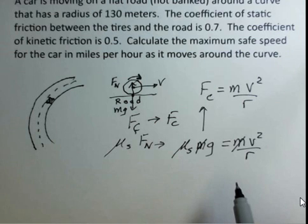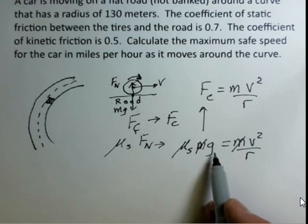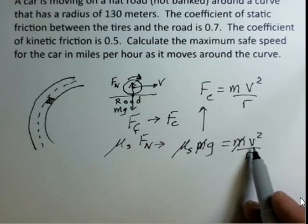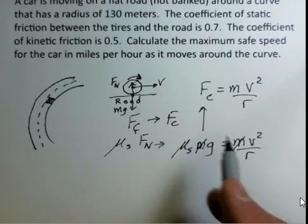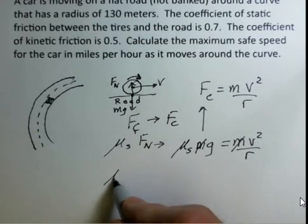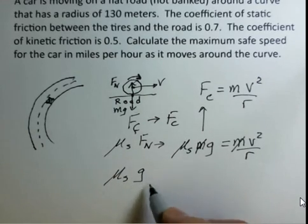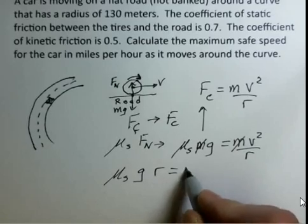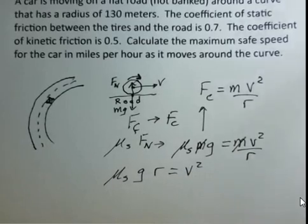So mu sub s, the static coefficient, acceleration due to gravity, the speed squared - we're interested in that speed - and the radius. We're given the radius of the circle. So we're going to have mu sub s times g times r is our speed squared. Let's go ahead and put in the numbers.